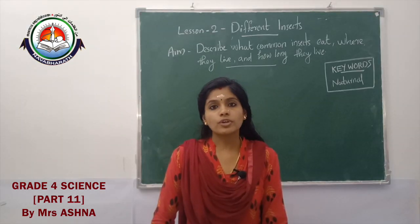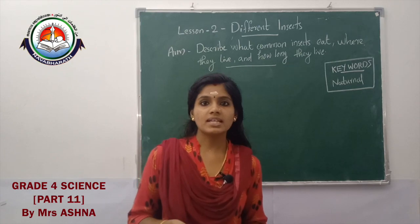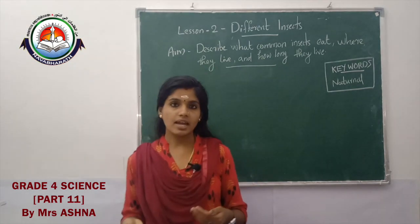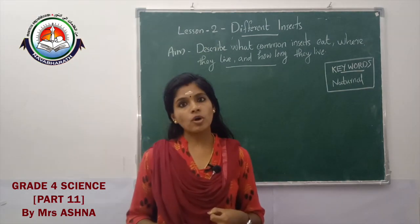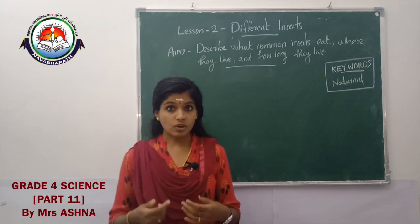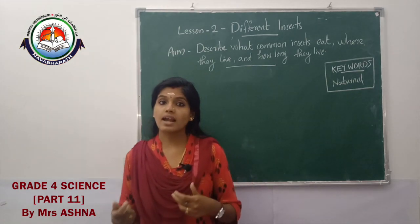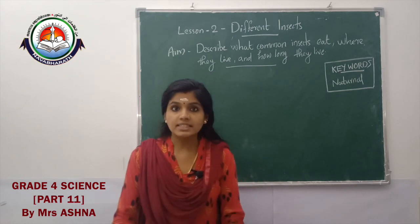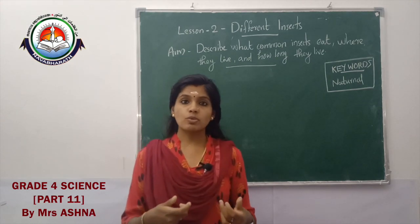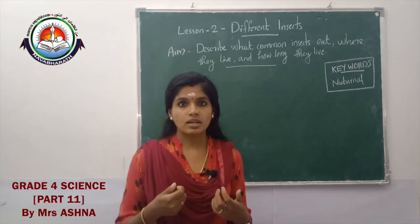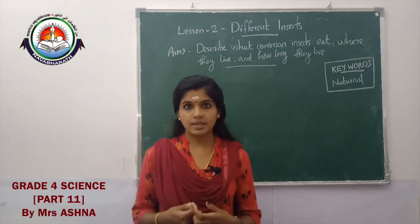Next, we are going to discuss different insects. We learned that an insect's body is divided into three parts: head, thorax, and abdomen. Now we will study the ways in which different insects are different from each other. Read your textbook pages 32 and 33. Five kinds of insects are mentioned: dragonfly, moths, silverfish, bed bug, and flea.